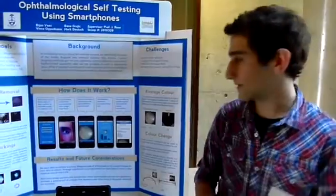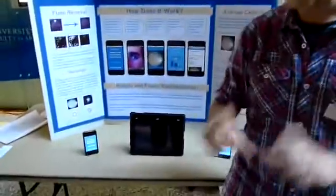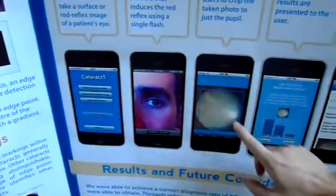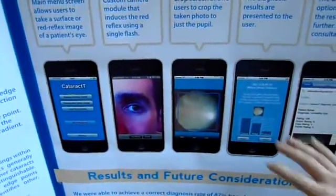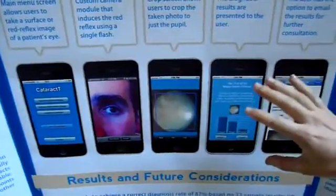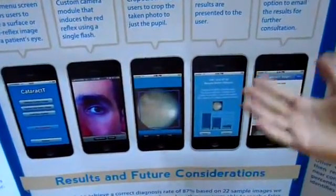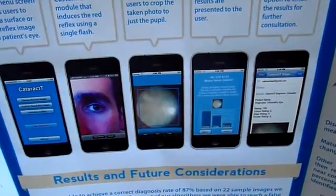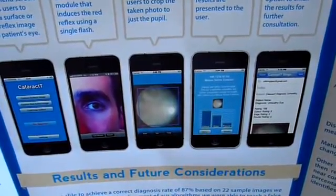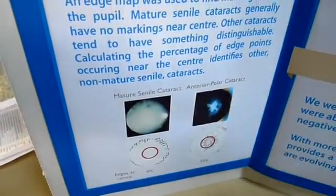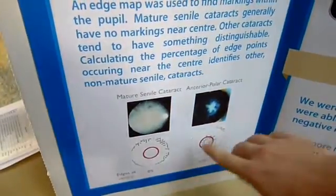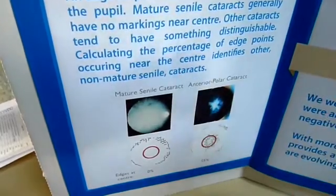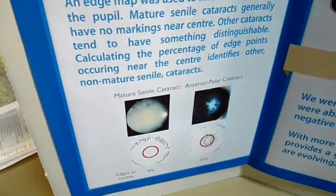Basically the way it works is all you need is just the iPhone. You take a picture of someone's eye, we crop to just the pupil through our software, and then we run our image processing algorithms on it. It gives you a diagnosis of how sure we are that somebody has a mature senile cataract, or if their eye is unhealthy or healthy. We do an edge map around the pupil and see if there are any edges within the center of the pupil — if there are, that tells us something is wrong with the eye.